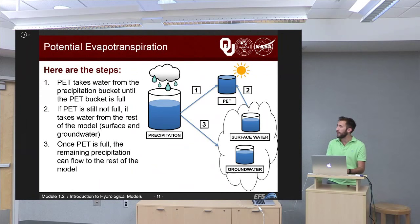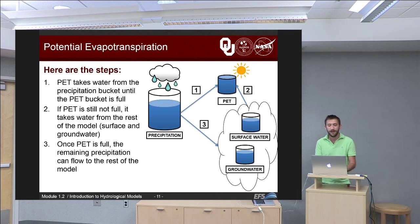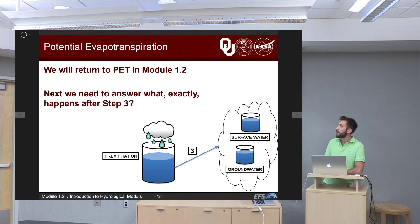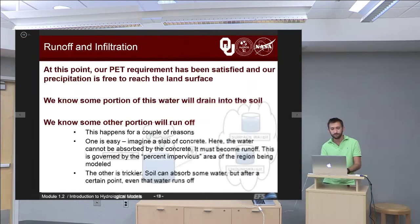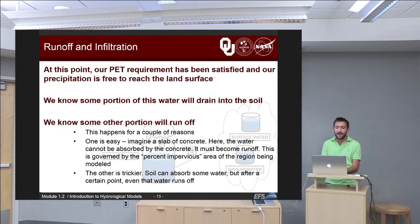Here are the steps, labeled with arrows and numbers. Step 1: we have a bucket that contains precipitation. PET takes water from the precipitation bucket until the PET bucket is full. Step 2: if the PET bucket is still not full, it takes water from the rest of the model — surface water and groundwater. Once PET is full, the rest of the water in the precipitation bucket empties out along step 3 and starts to fill up surface water and groundwater buckets. We'll come back to PET in module 2.1, but next we need to answer what exactly happens after step 3.